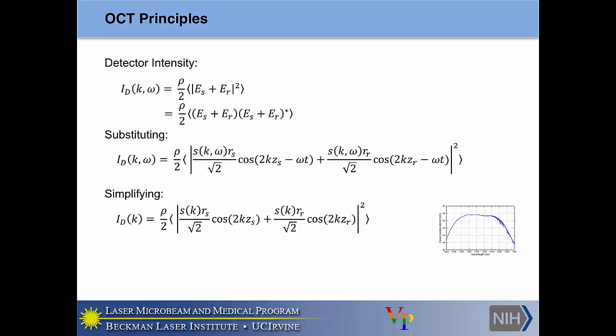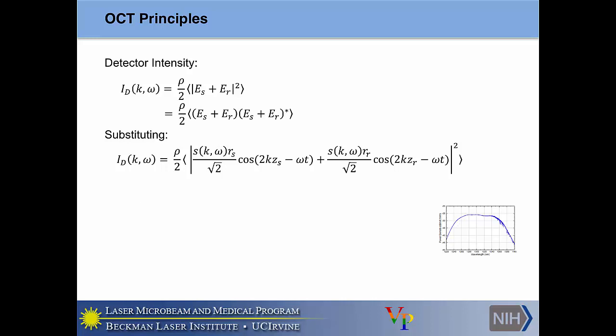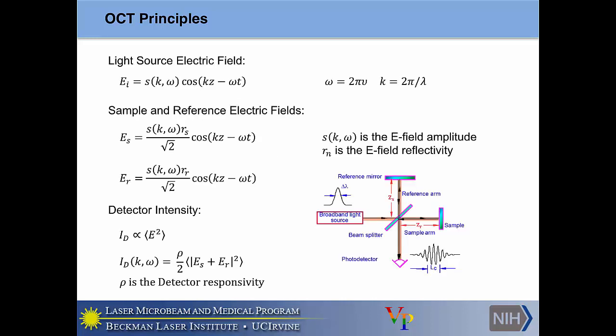Q: Where did the factor of 2 in cosine(2kz_s − ωt) come from? A: The 2 comes into play because light has to travel this distance once going there and once coming back.